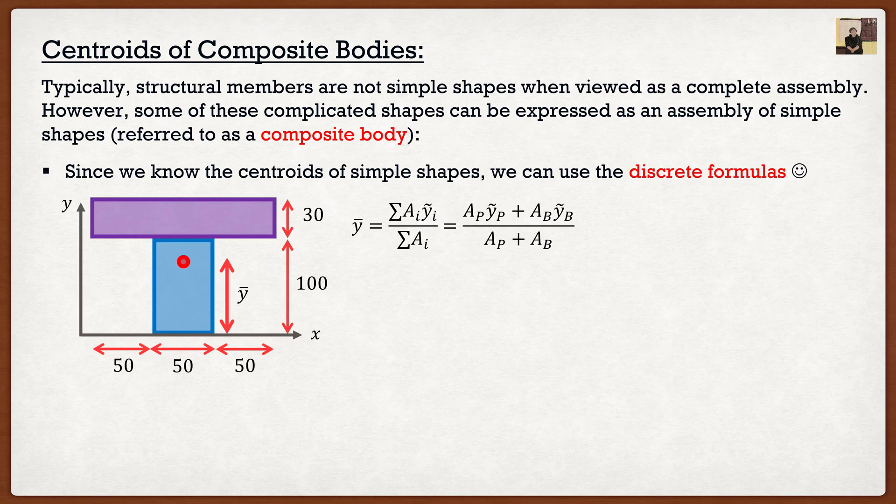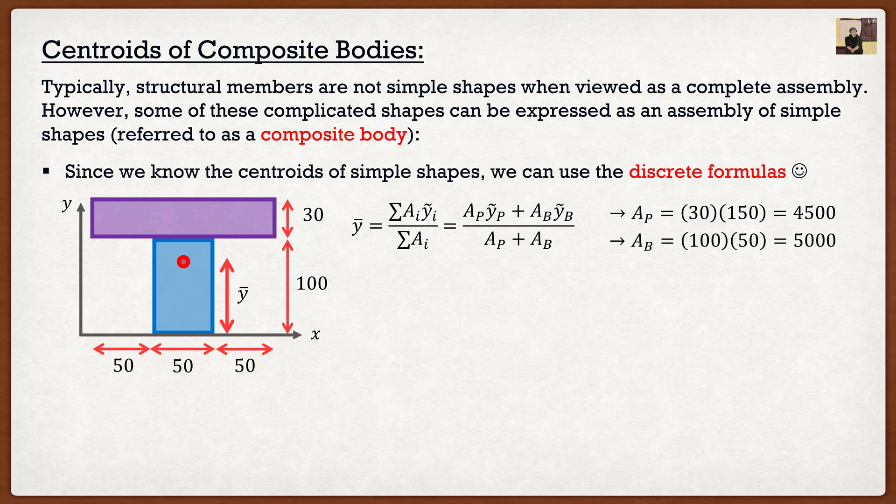Because if we were to look, well, the area of a rectangle for the purple one, that's just going to be 30 times 150. If you guys are struggling with the area of a rectangle, I think we have bigger issues than what a centroid is. So this is why it becomes nice and easy. The area of the blue shape, well, that's just going to be 100 times 50.